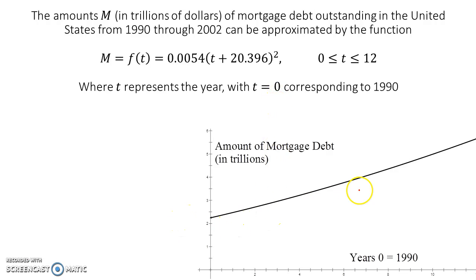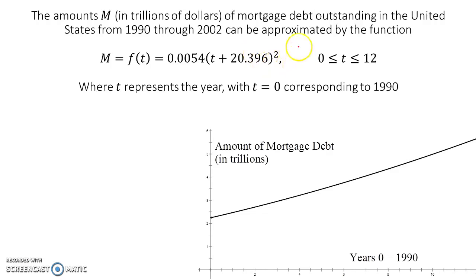I went ahead and made a graph — it looks like a line, but it is actually a parabola. We know it's a parabola because this is a squared function. It is just a really, really flattened out wide parabola for that short period of time that this is representing.